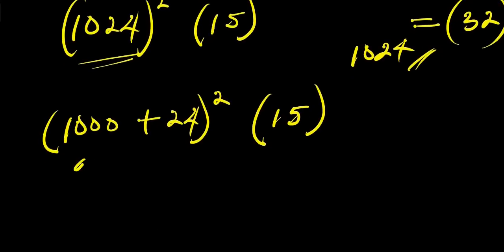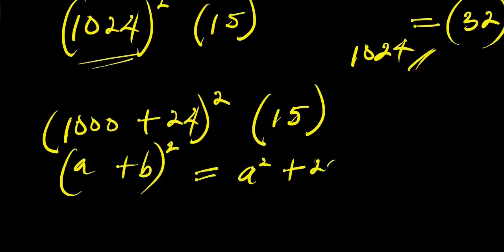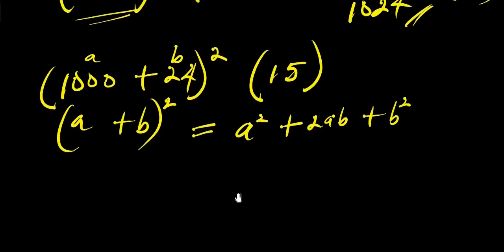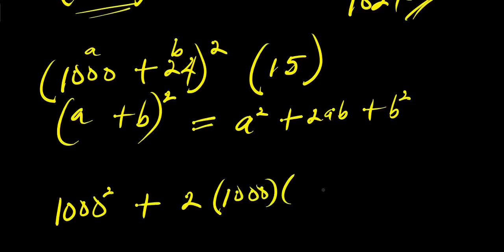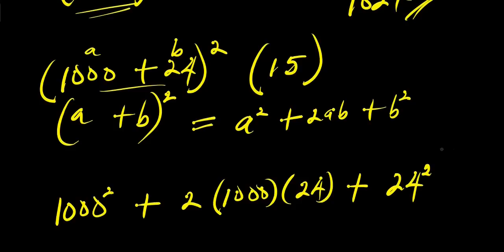We rewrite 1024 as 1000 plus 24, so we have (1000 plus 24) squared times 15. This is in the form (a plus b) squared, which equals a squared plus 2ab plus b squared, where a equals 1000 and b equals 24. We expand this and then multiply the whole result by 15.